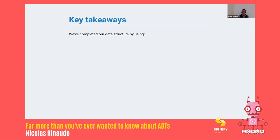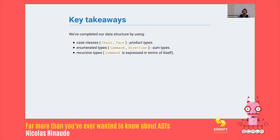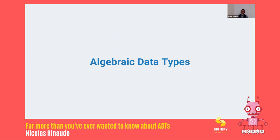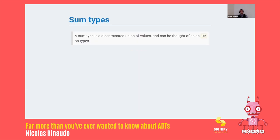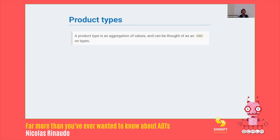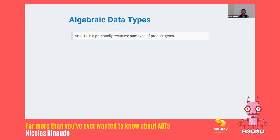At this point we have completed our data structure. We have used case classes — chain and face — so those are records, and they are known as product types. We have enumerated types — command and direction — which are known as sum types. And we had to make command recursive: it's expressed in terms of itself because chain is a command that contains a command. This is all we need to know to start talking about algebraic data types properly. An ADT can be a sum type, where a sum type is a discriminated union of values and can be thought of as an OR between types. We have product types, which are aggregation of values and can be thought of as an AND on types. And an ADT is a potentially recursive sum type of product types.